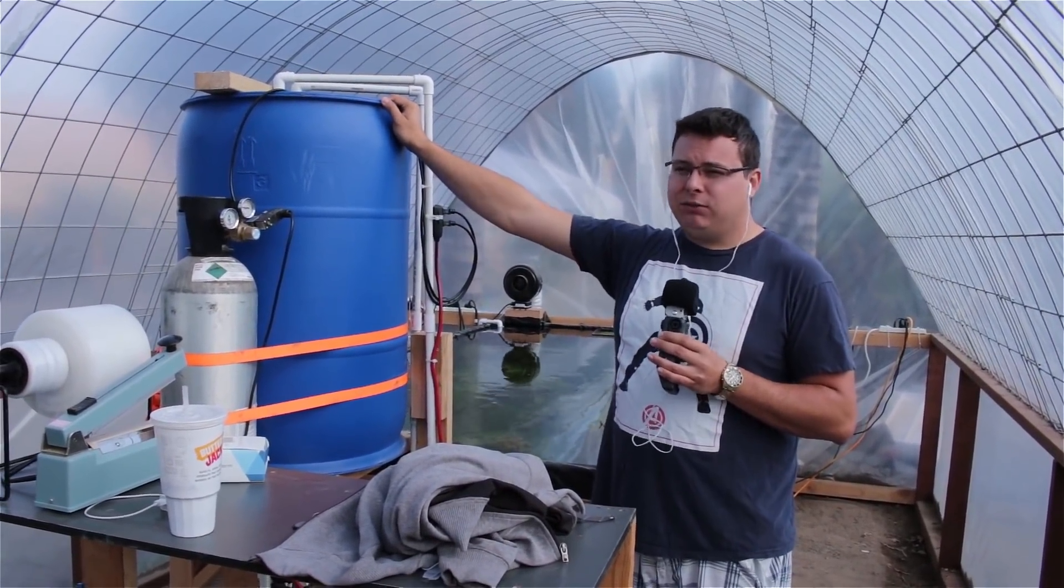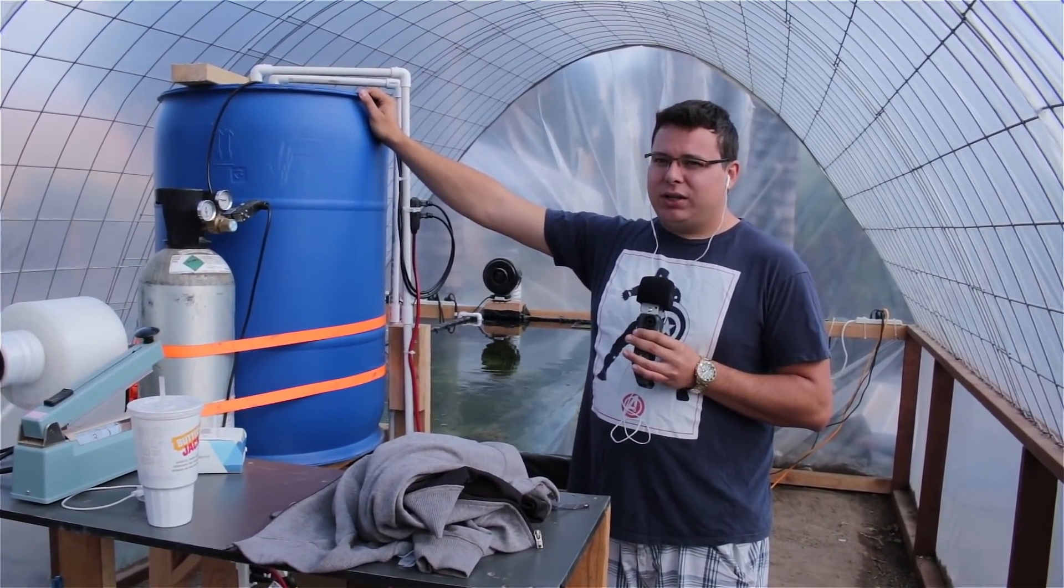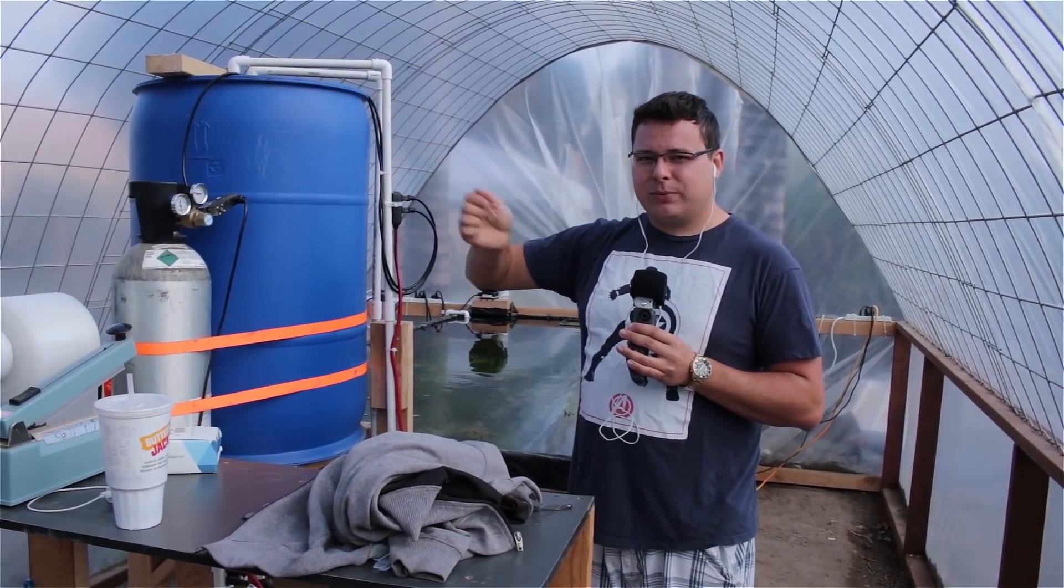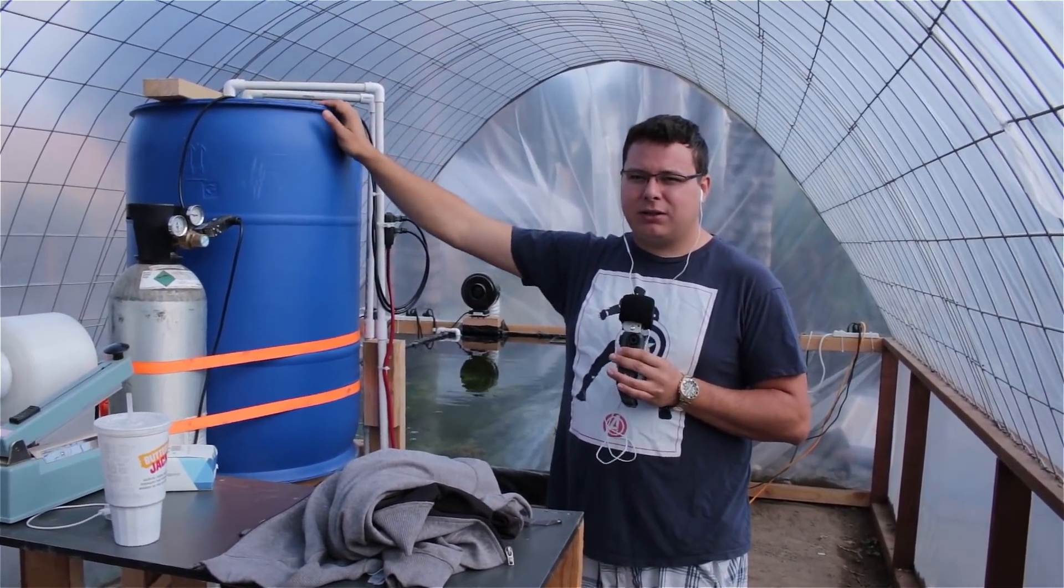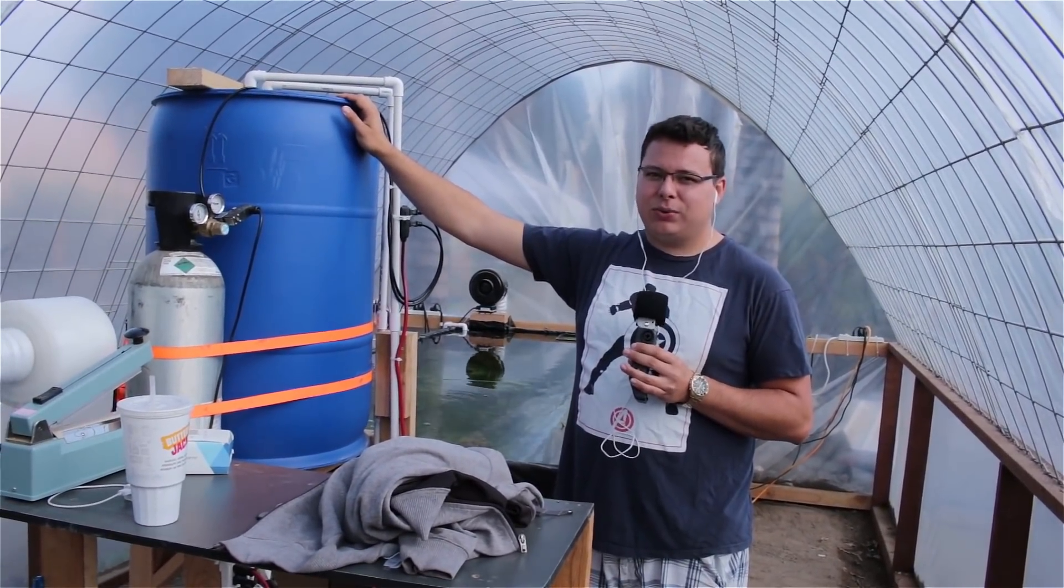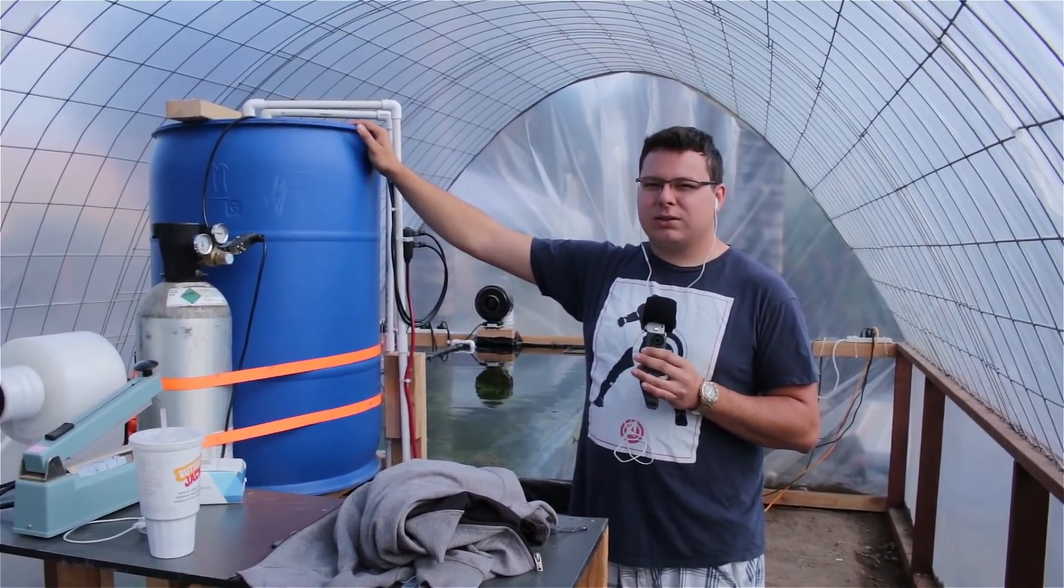And then I also got a five micron sock in here as well, filtering out all the little fine particles so it keeps the water crystal clear. They have to be replaced or washed out once every week or two weeks. I usually just normally spray them out and that helps them last a little bit longer, but after a month or so they get so clogged you can't really reuse them at all. So the filter socks have to be replaced at least once a month, but you can wash them out and make them last longer.